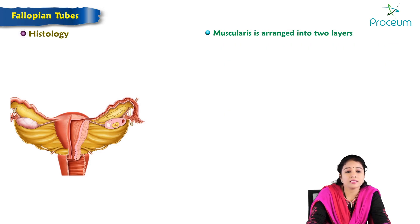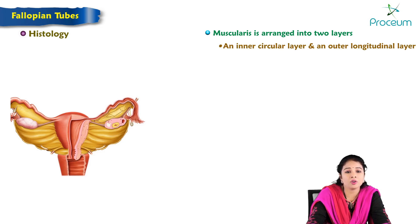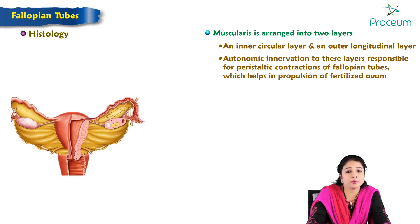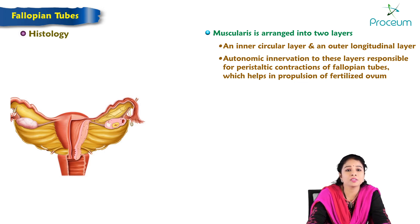The muscularis layer is arranged in two layers: the inner circular and outer longitudinal. Autonomic innervation to these layers is responsible for peristaltic contractions of the fallopian tubes, which helps in propulsion of the fertilized ovum.